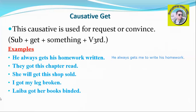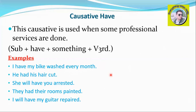Now let's move to the causative verb 'have' in the passive. The causative 'have' is used when some professional services are done — when we are paying someone to do something or to get something done. Any professional service.